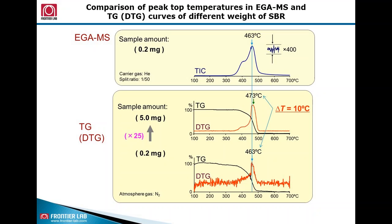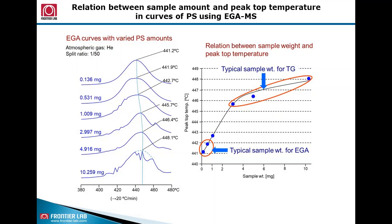This slide shows the temperature profile of SBR with EGA-MS and TGA. You can note that the apex temperature, peak top temperature of TGA data, is 10 degrees C higher than EGA-MS data.